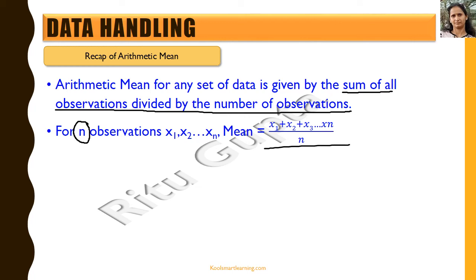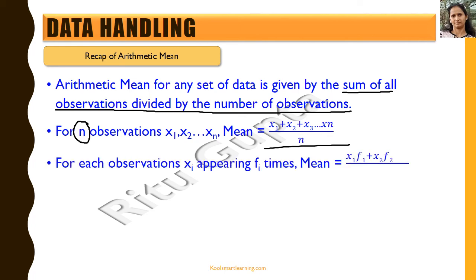This is what represents the arithmetic mean of the given set of observations. Now, for each observation xi, if it appears fi times, then we use a different formula to calculate the mean. So let's take an example to understand this.